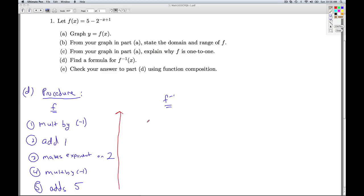So for the inverse, what's it going to look like? Well, instead of adding 5, I'm going to subtract 5. Multiplying by negative 1, I'm going to divide by negative 1. What's the opposite of making it the exponent on 2? Well, that's taking log base 2. Instead of adding 1, I'm going to subtract 1. Instead of multiplying by negative 1, I'm going to divide by negative 1.